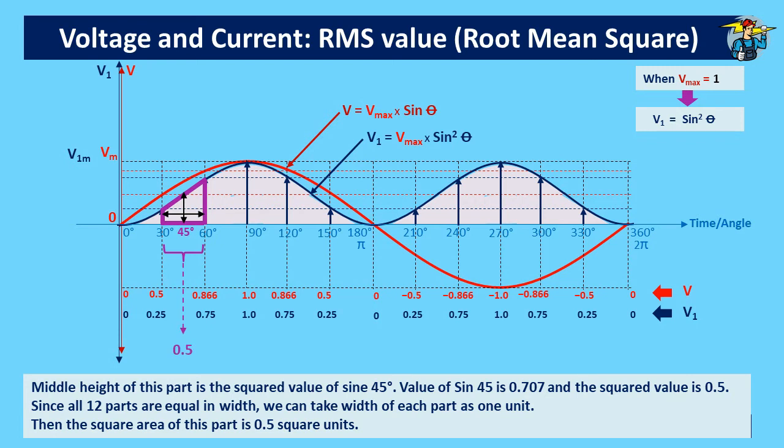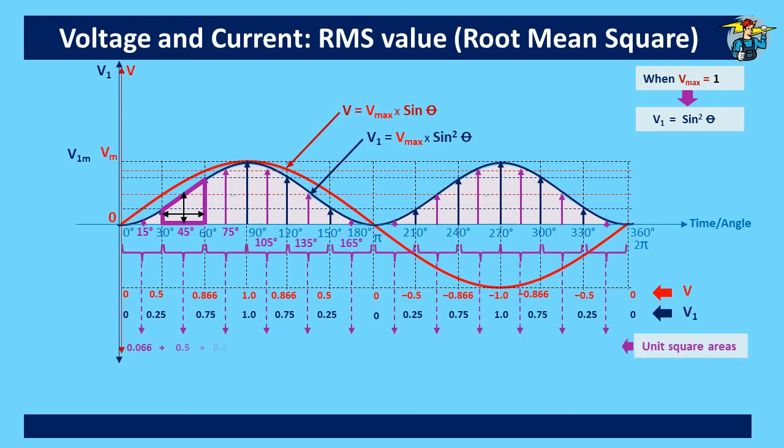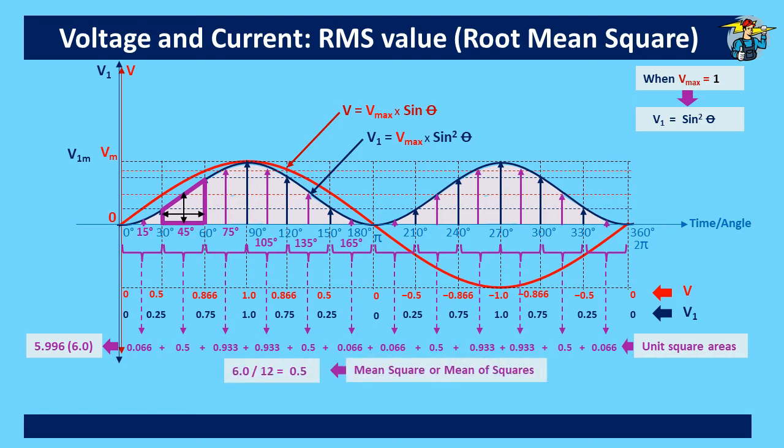Since all 12 parts are equal in width, we can take the width of each part as one unit. Then the square area of this part is 0.5 square units. Likewise, we can calculate unit square areas of all 12 parts and mention here under each column. When these 12 square areas are added together we get the total area under the curve V1. For total area under the curve we get 5.996, which can be rounded off as 6.0. Then to get the mean of this total square area, you need to divide 6.0 by the total of equal parts, that is by 12.